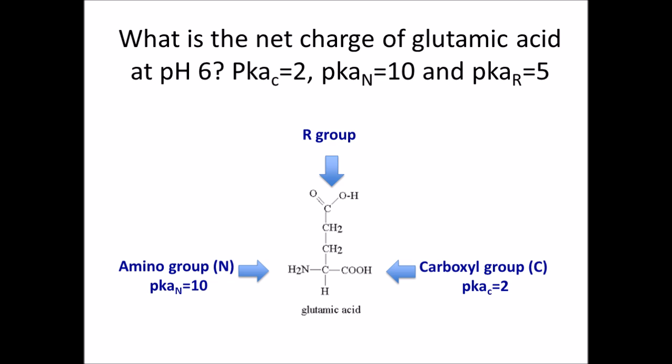Hi everyone, here's a tutorial on how to calculate the net charge for an amino acid. In this tutorial, I'll be going over an example question, and the example question is shown above: what is the net charge of glutamic acid at pH 6?